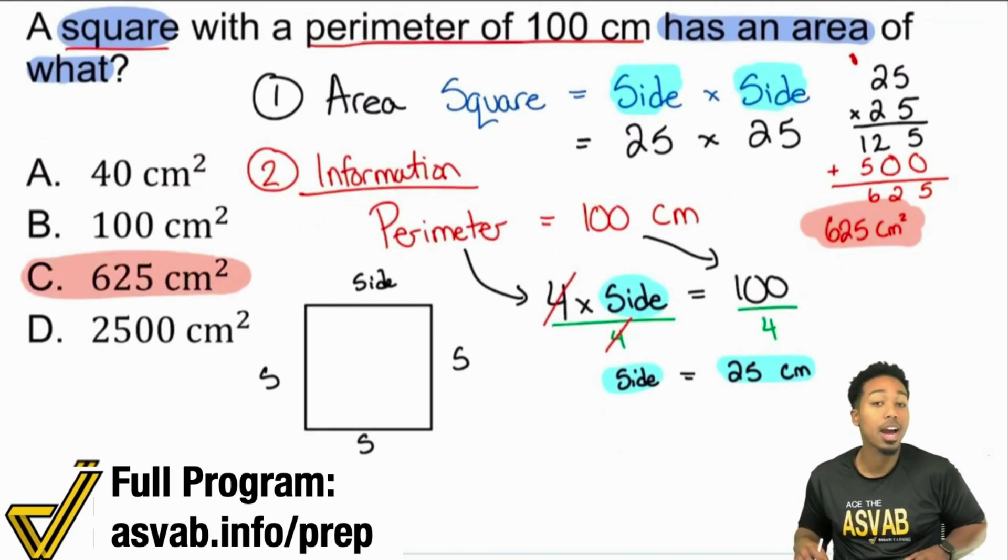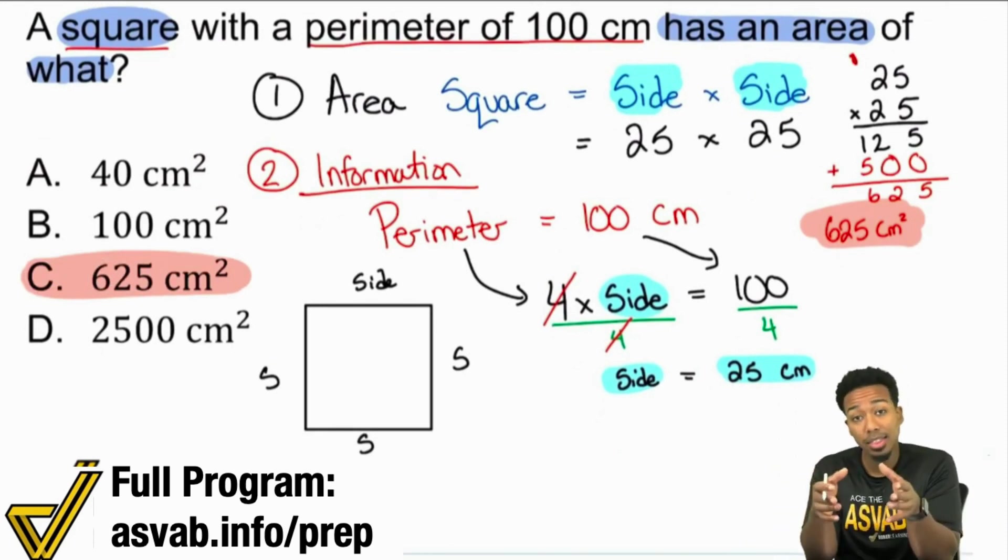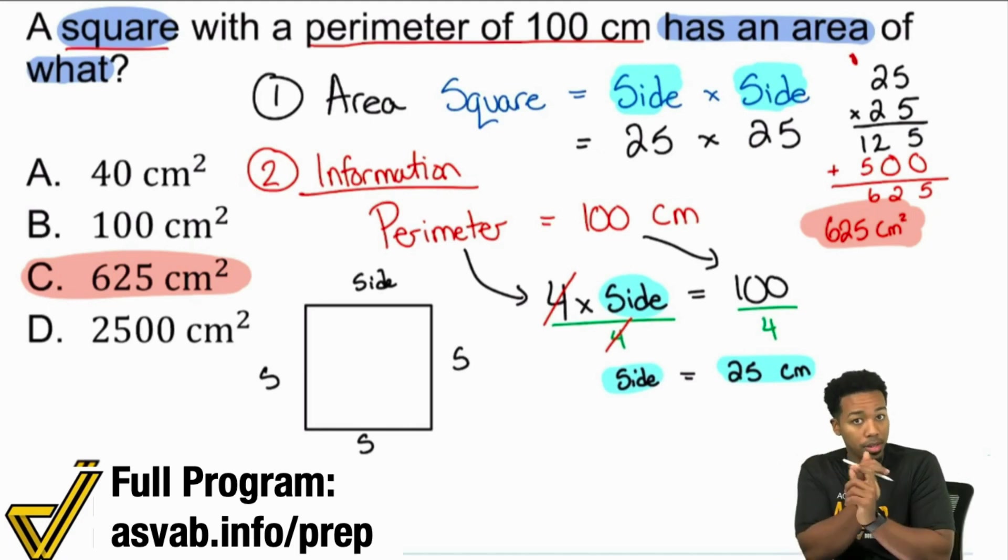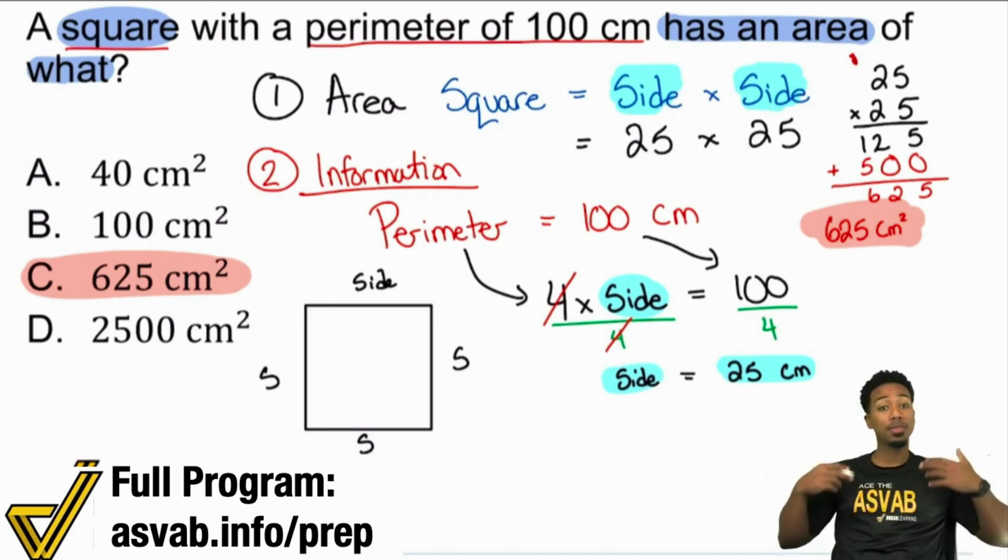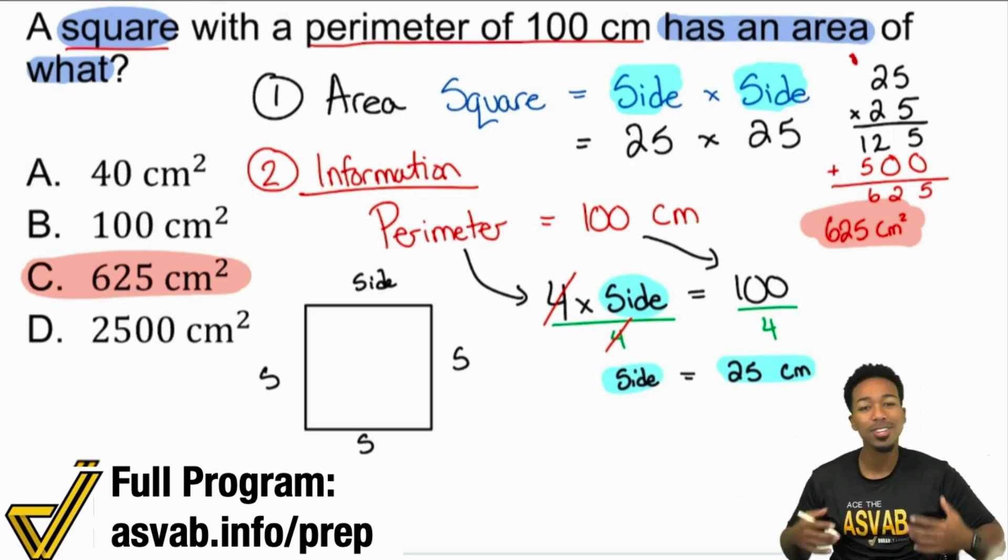But, let's not forget how we got there. Really, again, the way that we got there was, again, what do we want? We want the area of this square. Well, what do we have? It's perimeter. Is there any way that we can go from the perimeter to the area? Yeah. The area needs the side of the square. The perimeter uses the side of the square. And so, we use the perimeter to get the side, use the side to get the area. We're done. So, again, it's really like a small little puzzle. You've got to get through it that way. And so, again, if you're looking for more ASVAB help, I've got your back.